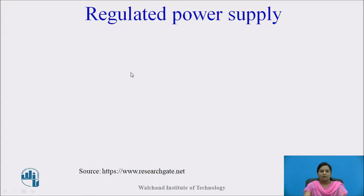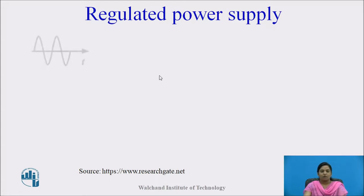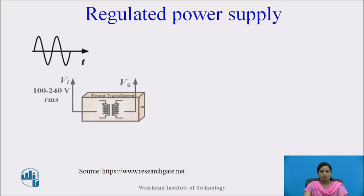Today almost all electronics devices need a DC supply for smooth operation, and they also need a power supply within certain limits. This DC supply is derived from AC supply. Regulated power supply is used to convert unregulated AC supply into DC supply. The first block used is the transformer, which is used to increase or decrease the voltage level of input AC supply.